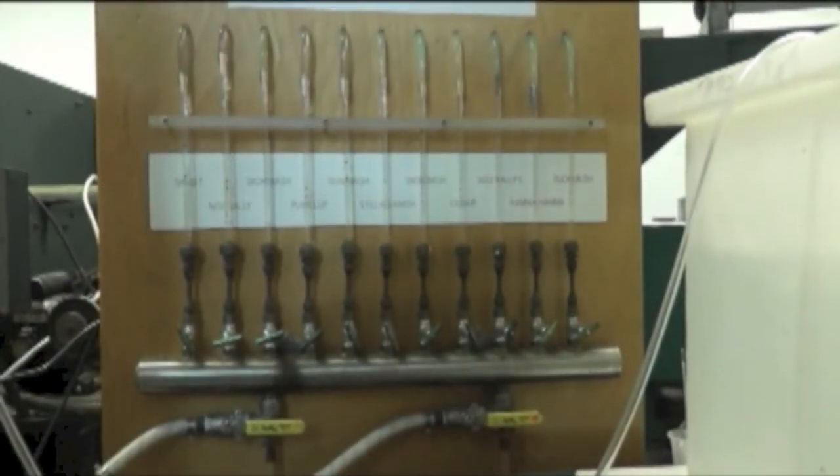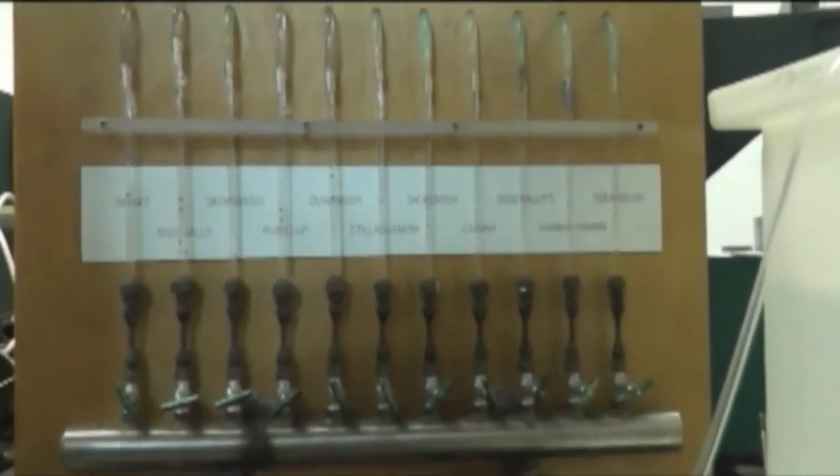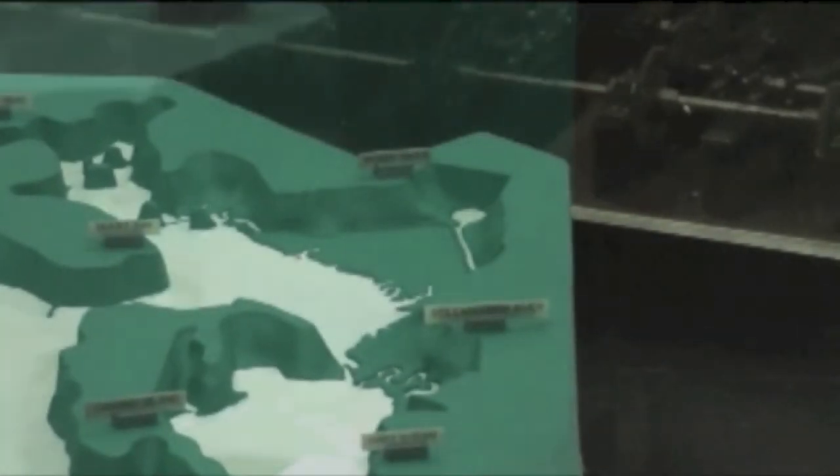To make the rivers, tap water flows into a series of glass pipes with valves to control the amount of flow in each simulated river. Plastic tubes carry the water to each river mouth, and from there, the water flows onto the surface of the model's sound.